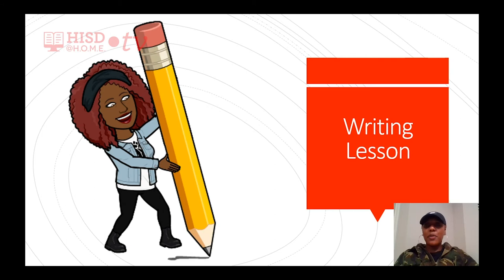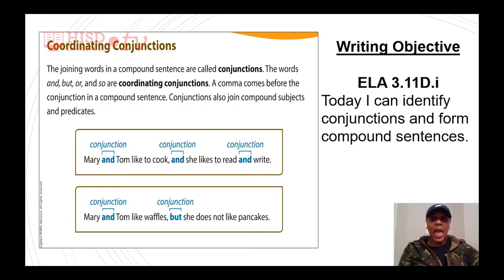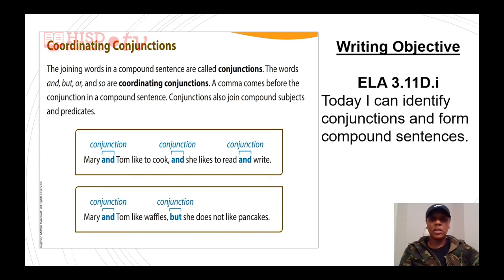We're now going to move into our writing component of our lesson for today. Our first writing objective comes from ELA 3.11 DI. Today I can identify conjunctions and form compound sentences. A compound sentence is two simple sentences put together. We join them with coordinating conjunctions — the words and, but, or, and so. A comma comes before the conjunction in a compound sentence.